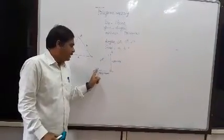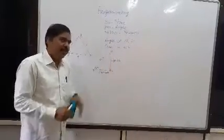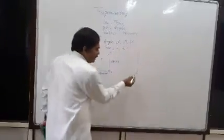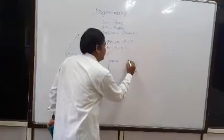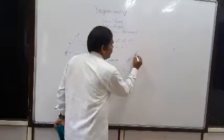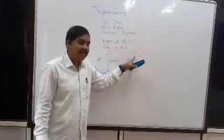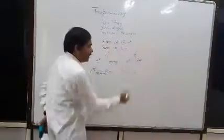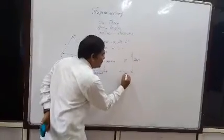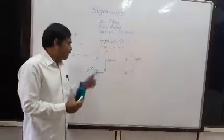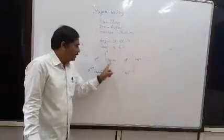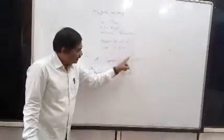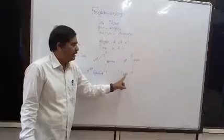Suppose the reference angle is changed — let it be gamma instead. The side opposite to 90 degrees is still the hypotenuse. The side adjacent to gamma is the adjacent side, and the side opposite to gamma is the opposite side. The hypotenuse cannot be interchanged, but the adjacent and opposite sides depend on the chosen reference angle.